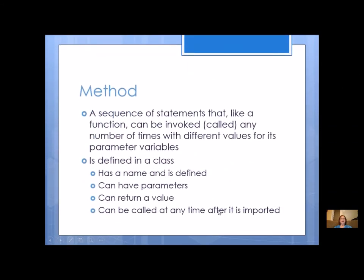A method is also a sequence of statements that, like a function, can be invoked or called any number of times with different values for its parameter variables. So really, they are the same thing. They are a section of code. It is defined in a class, so that's going to be a little bit different. But it has a name and is defined. It can have parameters. It can return a value. It can be called at any time after it is imported. So right away, everything is the same about a function and method, except that a method is defined in a class and a function is just defined in the code editor.